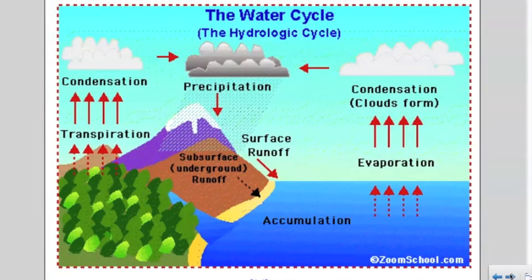The water cycle is a continuous movement of water on, above, and below the Earth's surface.